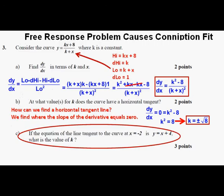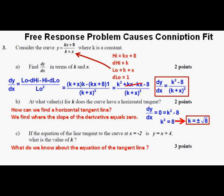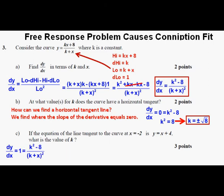Now on to Part C: If the equation of the line tangent to the curve at x equals negative 2 is y equals x plus 4, what is the value of k? Since the equation of the tangent line is y equals x plus 4, we know the slope of that tangent line is 1. So we take dy/dx from Part A and set it equal to 1: 1 equals (k squared minus 8) over (k plus x) squared. Cross-multiplying, we have (k plus x) squared equals k squared minus 8.